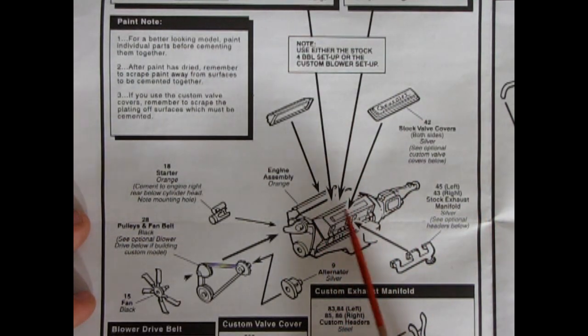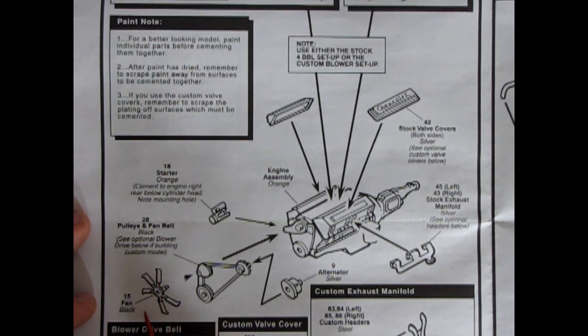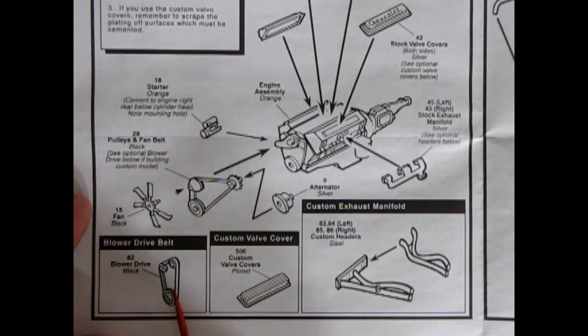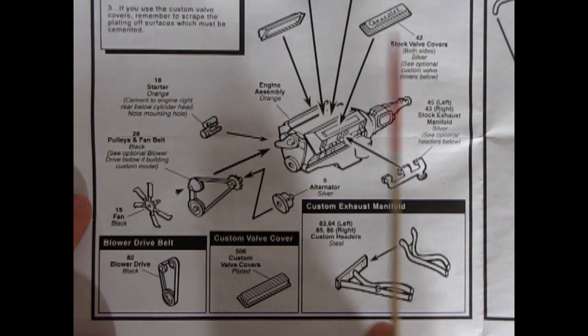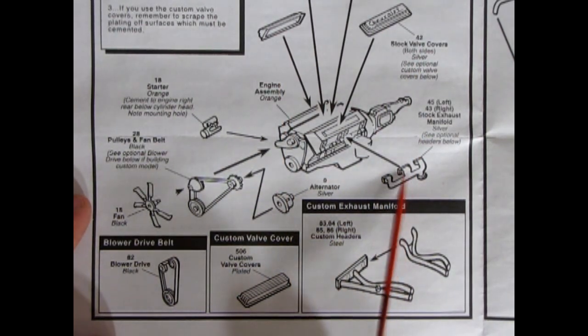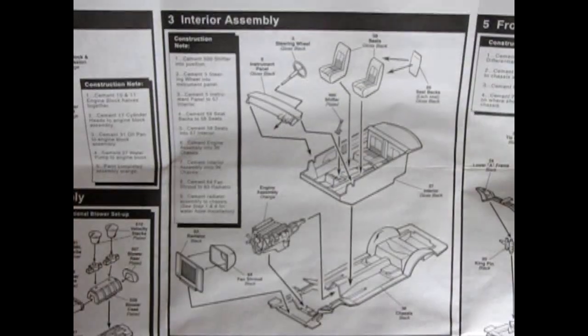If you use the custom valve covers, remember to scrape the plating off surfaces which must be cemented. Okay, so always something important. All right, so there's our engine glued together from step one. Now we get to add on our exhaust manifolds. Those are the stock ones. Our stock valve covers, our starter, the pulley and the fans and our alternator. And now here down below the custom components. So you've got the blower belt drive. And then your custom valve covers that are plated which replace the Chevrolets. And then we've got the custom exhaust manifolds which would replace these.